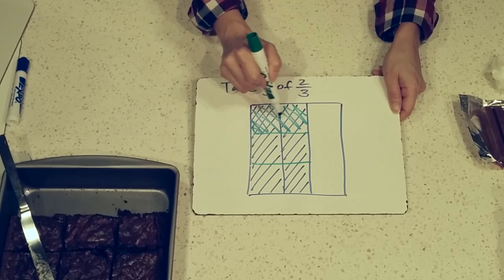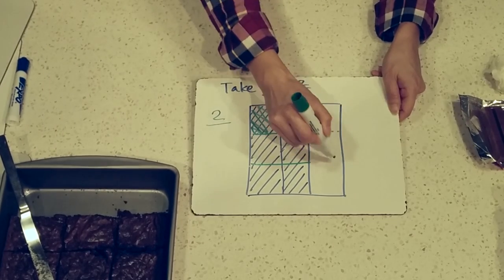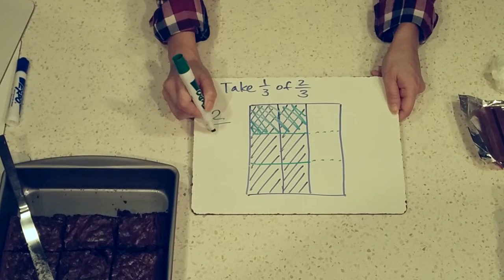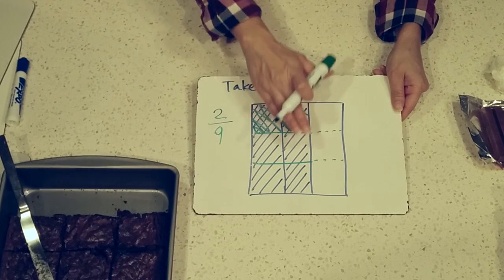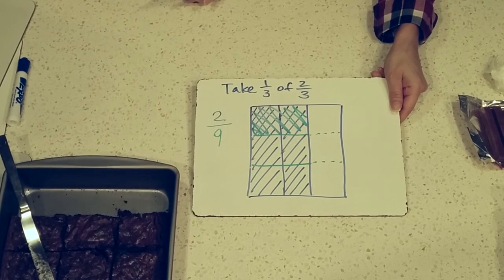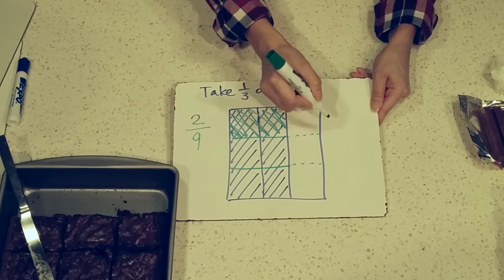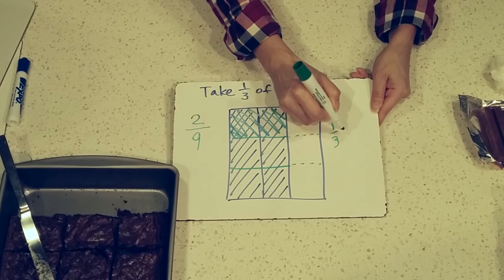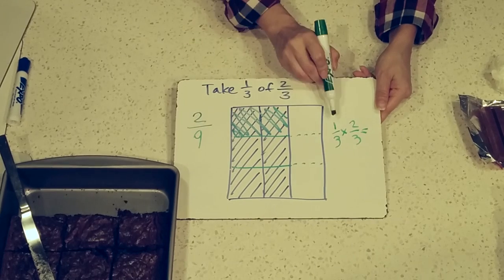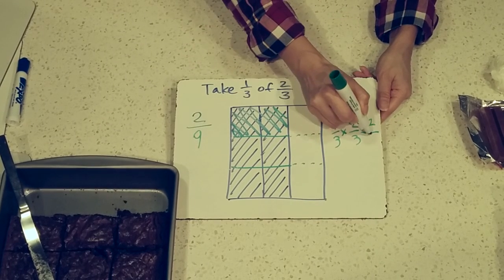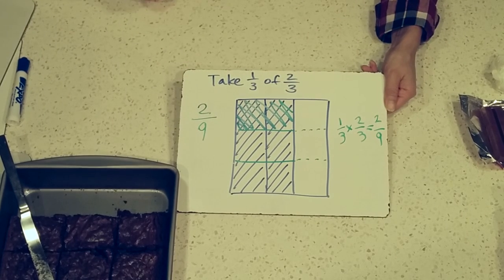You can see that if I take one-third of two-thirds, these are the two pieces I end up eating. I ate two out of a total of — if these pieces were here — nine pieces. So I actually ended up eating two-ninths of the brownie pan. So taking a third of two-thirds equaled two-ninths. One-third times two-thirds: one times two is two, and three times three is nine, so it does equal two-ninths. When you take a part of an amount, you are multiplying.